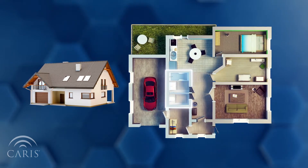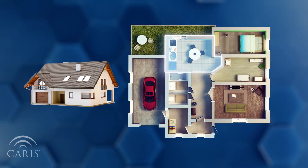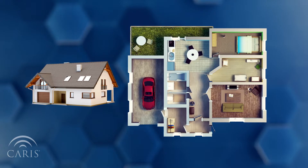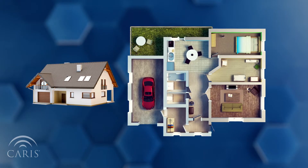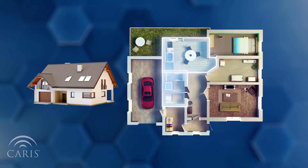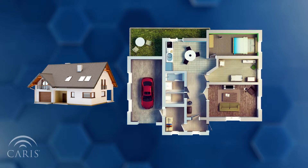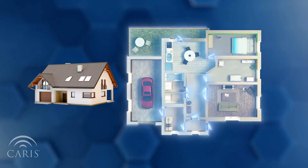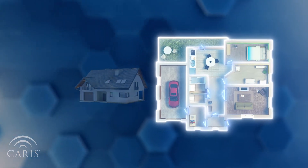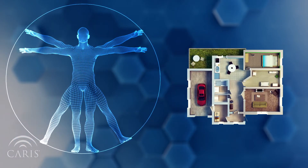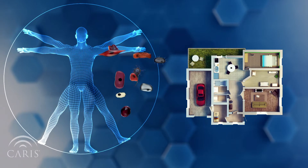A bathroom has a shower. The kitchen has a refrigerator and an oven. Some features can be found in multiple rooms. A bathroom and a kitchen both have a sink, while all of the rooms in a house have a door, floor, and walls. An organism is like a house, but instead of rooms, it is composed of cells.